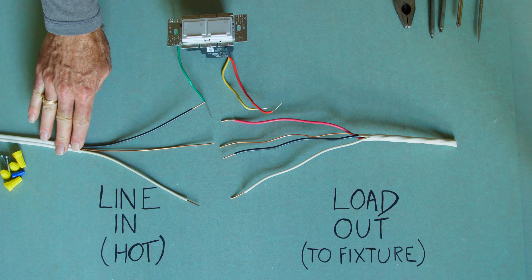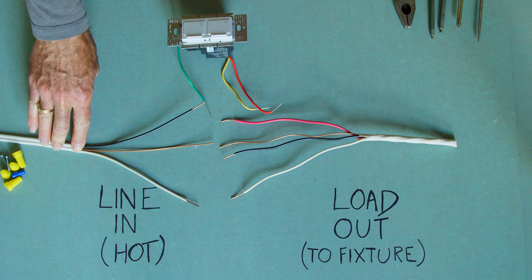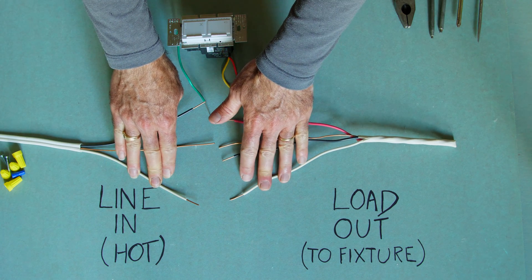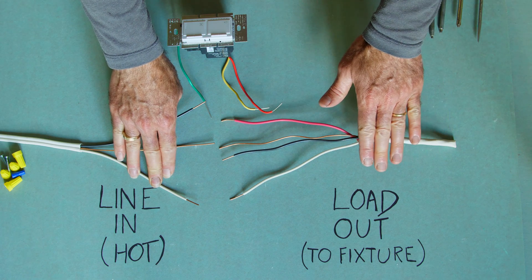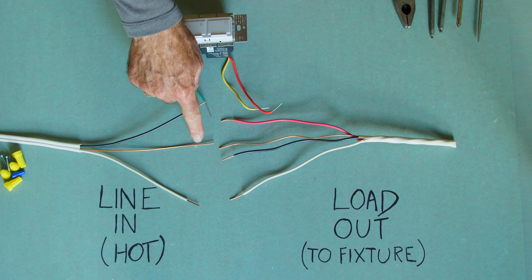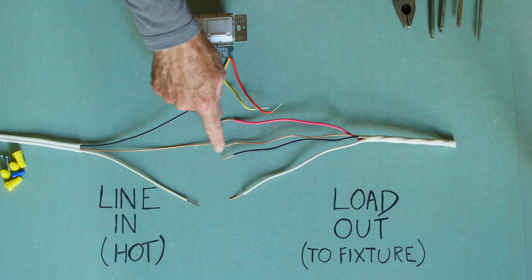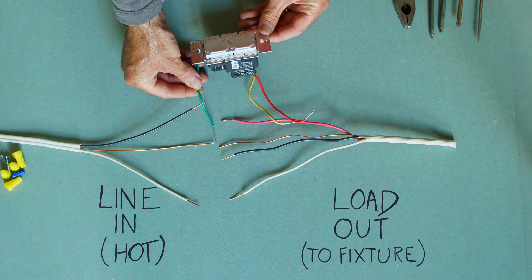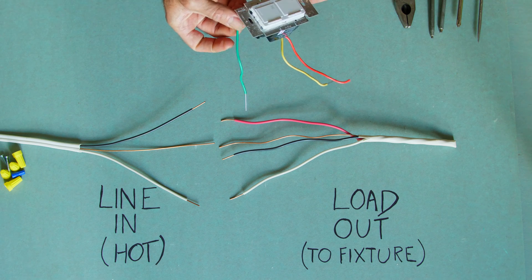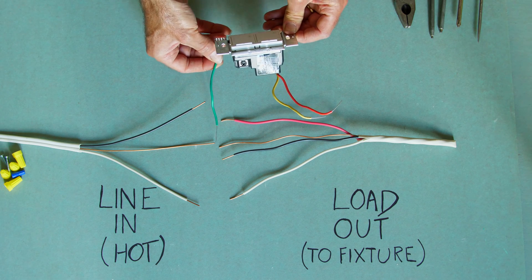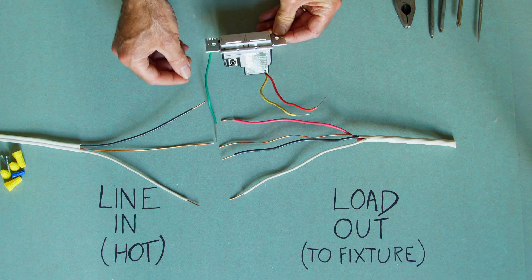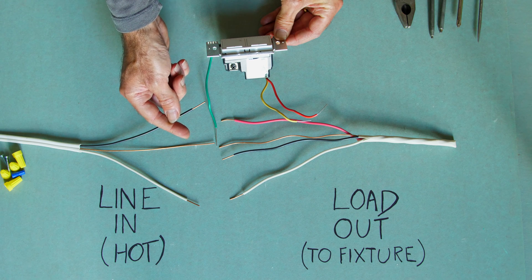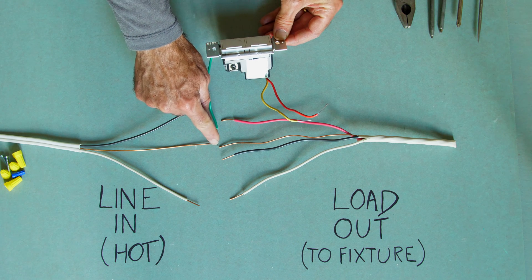Now starting with your line in which is your live wire, your power source, the white from your line in is going to go to the white of your loadout which is the one going to the fixture. Your bare copper wire which is your grounds will be connected together along with the green from the switch. If your switch doesn't have an existing green then make a pigtail and put that pigtail on as well, as there should be a ground coming from your junction box.